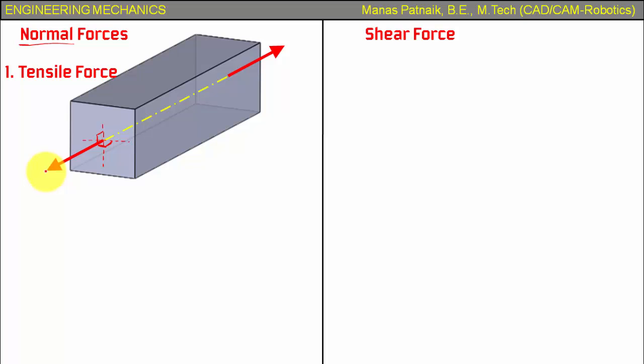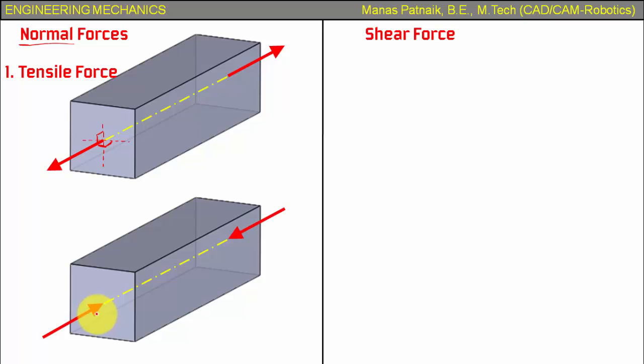Let's take a look at a different kind of a normal force. Here it is, this is the object. Let's have the axis and now let me reverse the direction of the force. Again this is an axial force, normal force in fact.